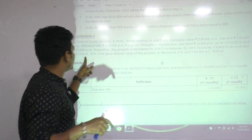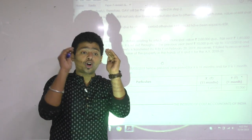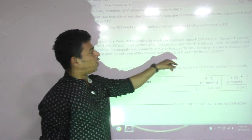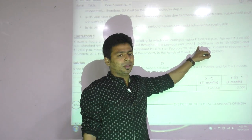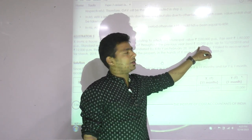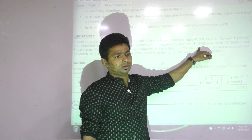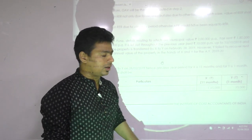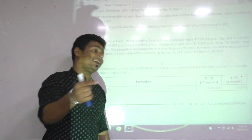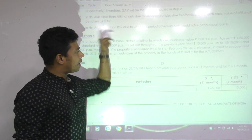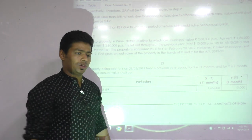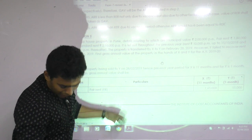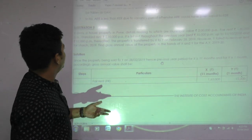So October me pura rent kitna hoga? 15th October tak 10,000, after 15th October 12,000. What is the rent of October? What is the rent of April, May? Come on, reply. 10,000 for June, July, August, September, October half month - that's 11,000. Then November is 12,000, December 12,000, it will be continued. That is the one twist - just mathematical calculation.